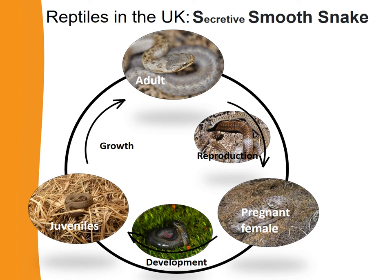Another animal with a very similar life cycle is the smooth snake. The adults reproduce, then you have the pregnant female — like the adder, a female that has eggs inside her. Those eggs develop, the young hatch, and then she gives birth to the young and ejects the eggshells. There's a picture of a newly hatched smooth snake. They develop, grow, and become adults.